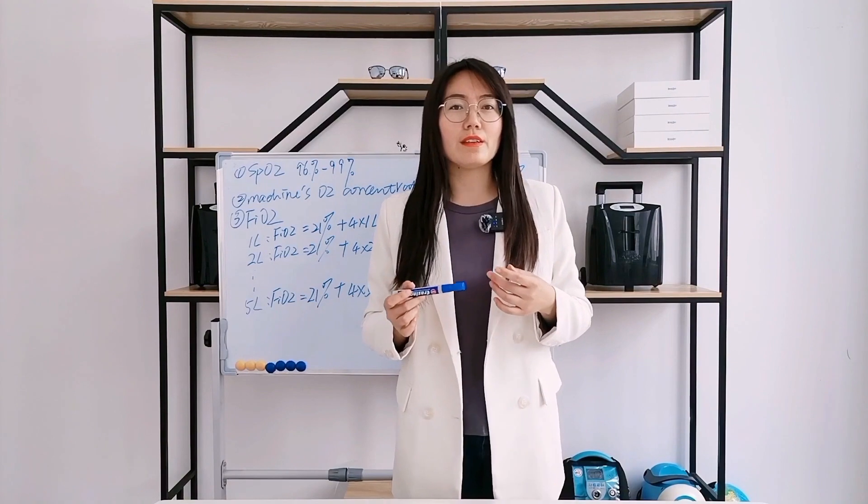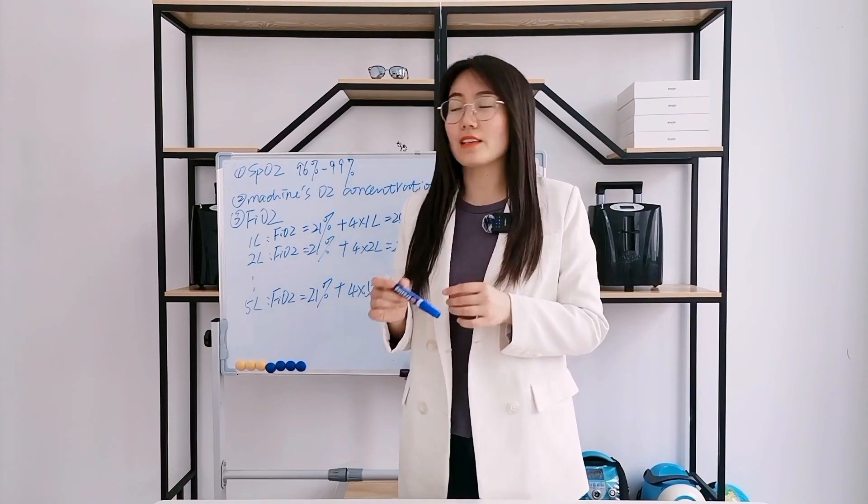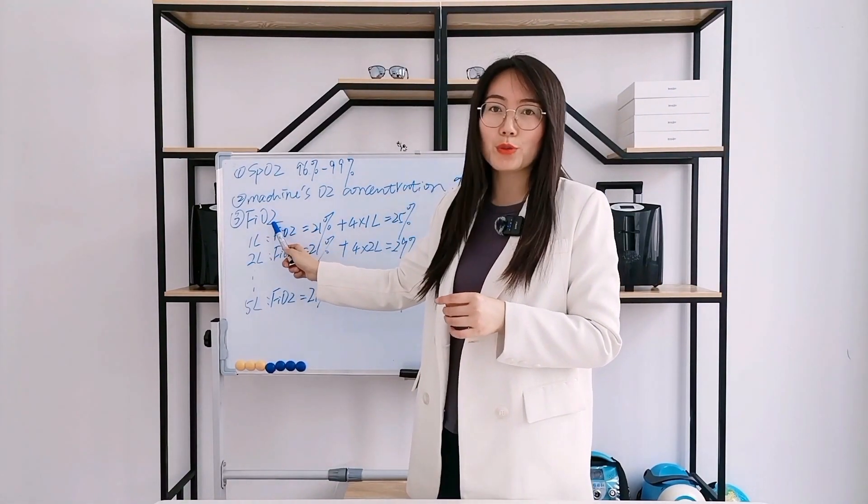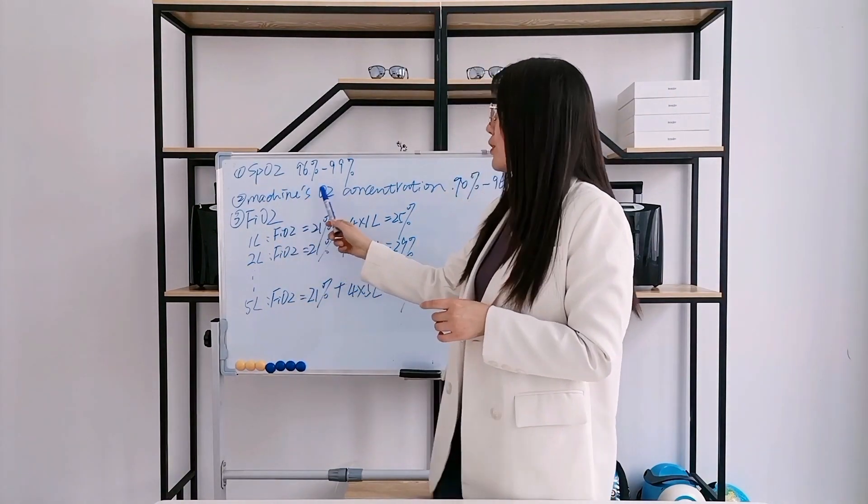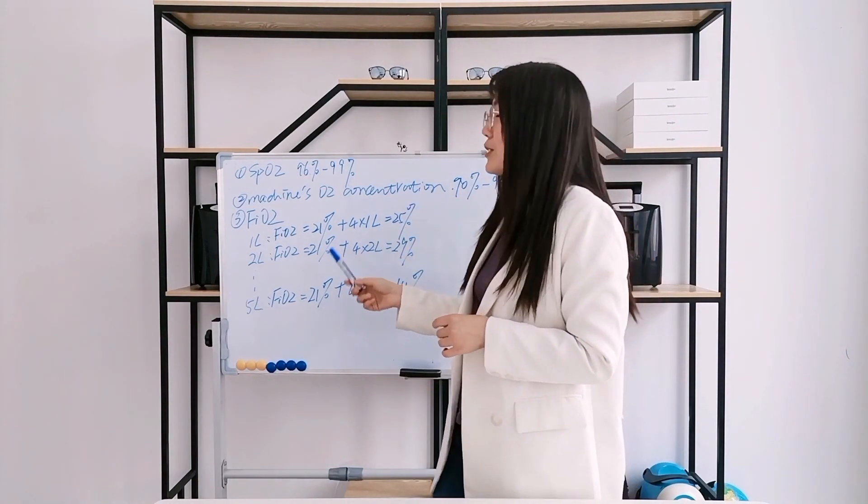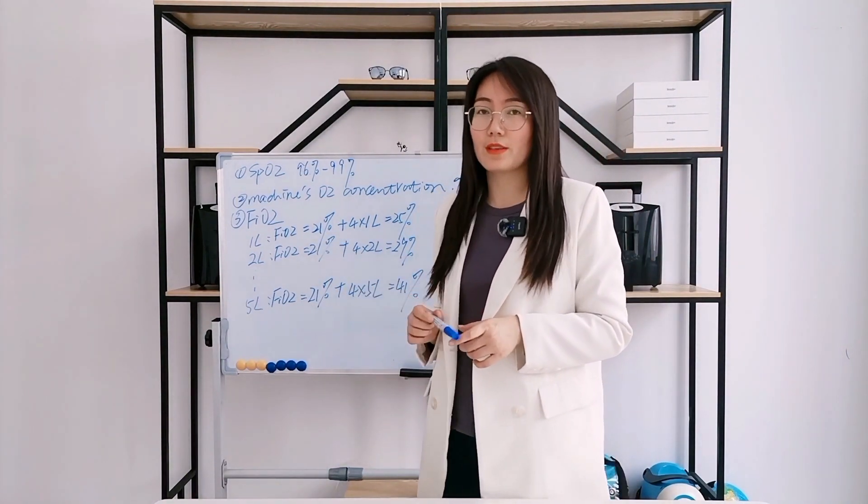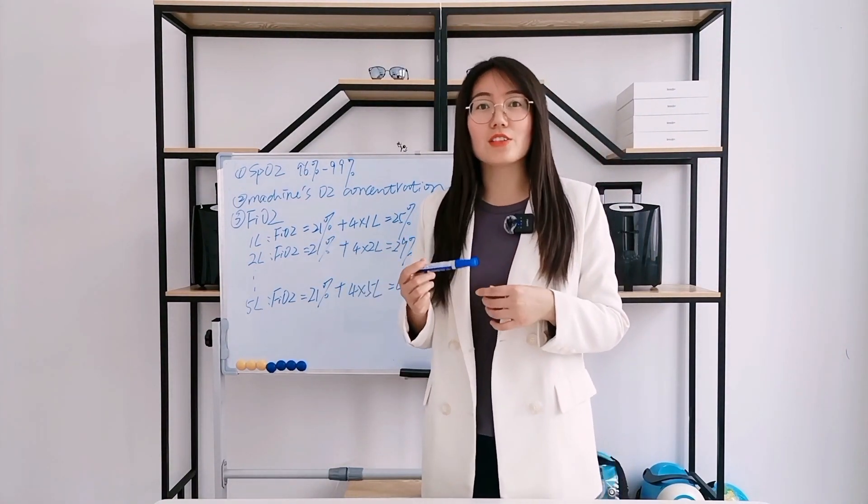In the case I mentioned at the beginning, this client said FiO2 is 40%. So he thought the machine's oxygen concentration should also be adjusted to 40%. That is a misunderstanding.